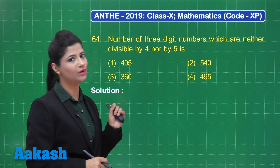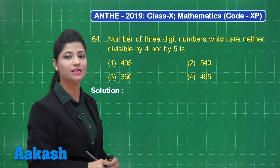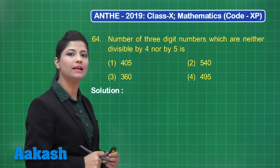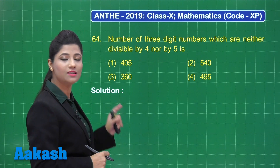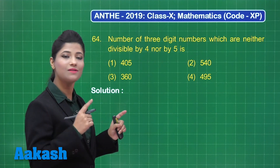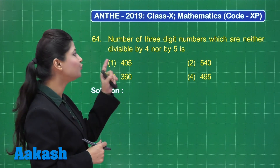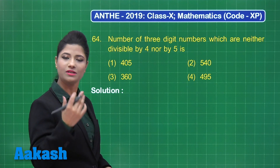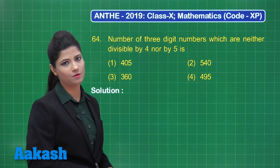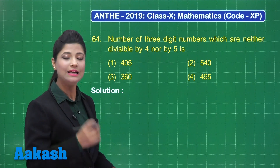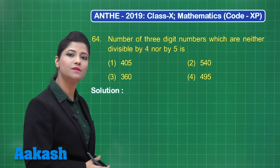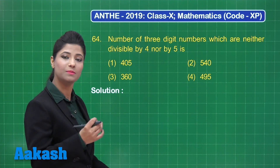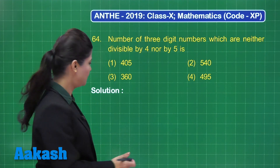Then I will be calculating 3-digit numbers which are divisible by 5. Then I will calculate the 3-digit numbers divisible by both 4 and 5 — that is, divisible by 20 — because a number divisible by 20 will also be divisible by both 4 and 5.